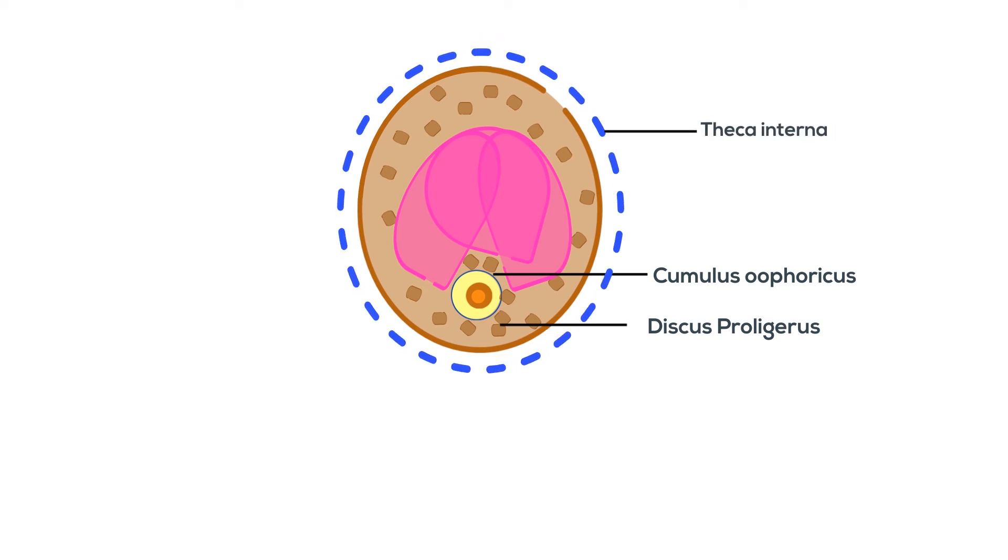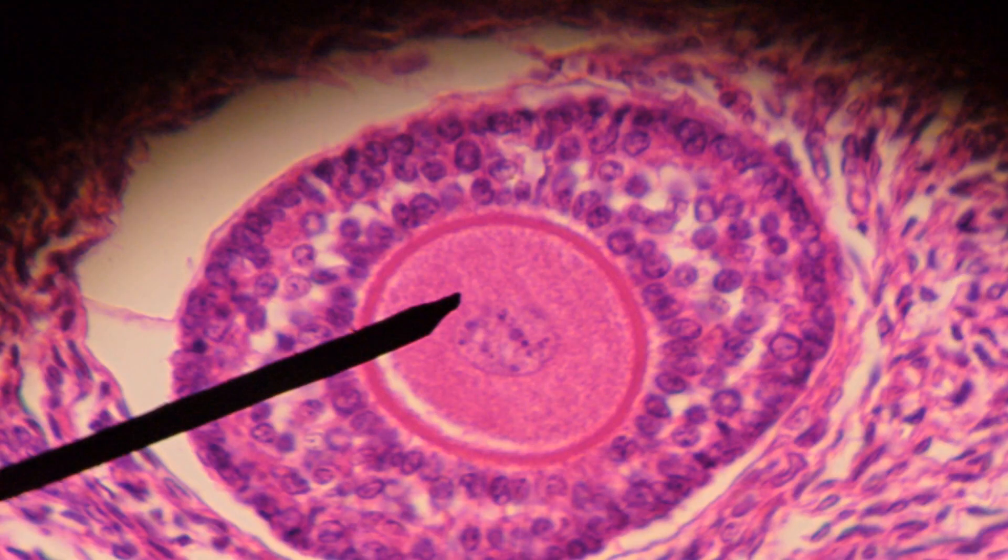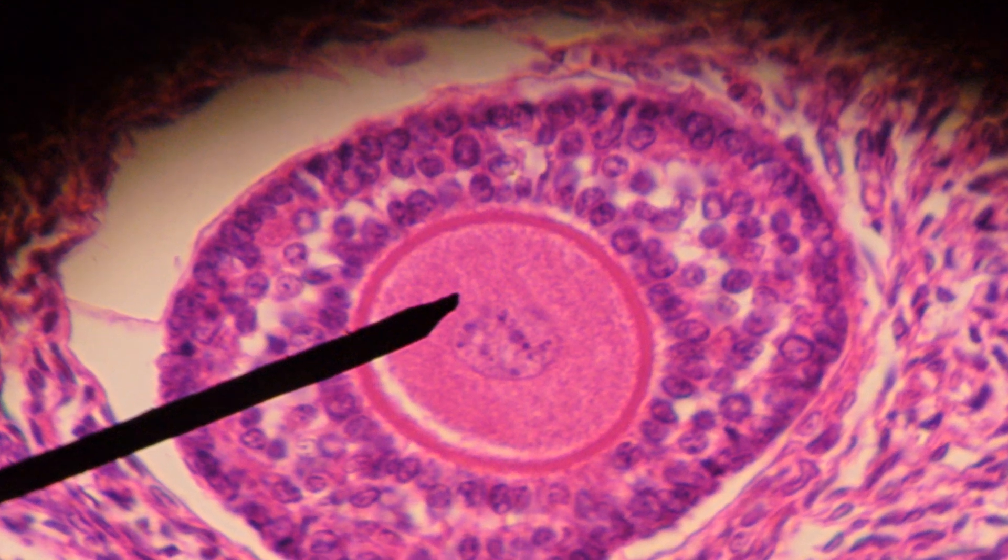Stromal cells condense to form theca interna, and some fibrous tissue gets condensed to form theca externa. The ovarian follicle is now fully matured and is termed Graafian follicle.